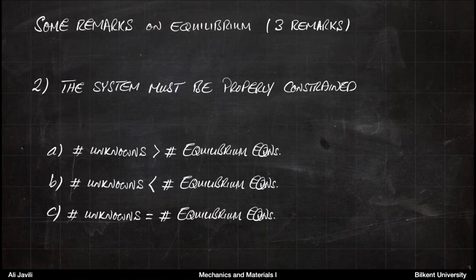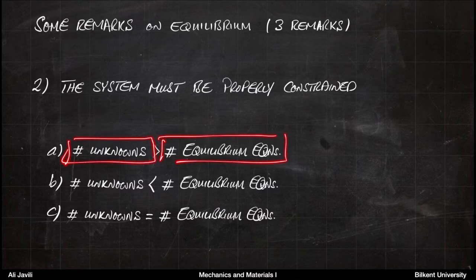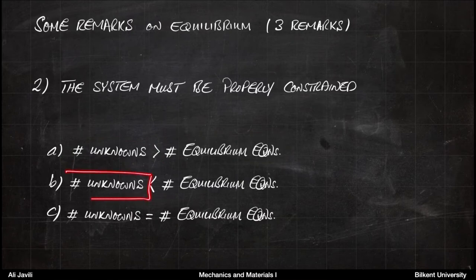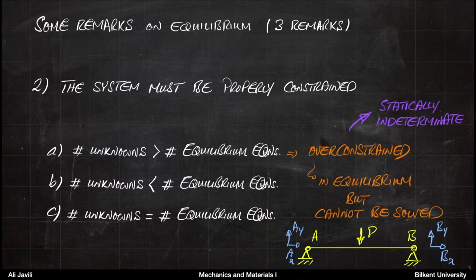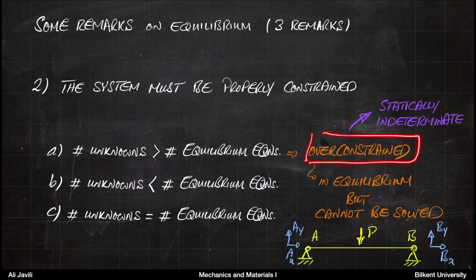More formally, the number of unknowns could be more than the number of equations, less than the number of equations, or equal to the number of equations — three different types of problems. We want to know which one is solvable and how to handle them. If the number of unknowns is more than the number of equilibrium equations, the system is over-constrained or overly constrained.